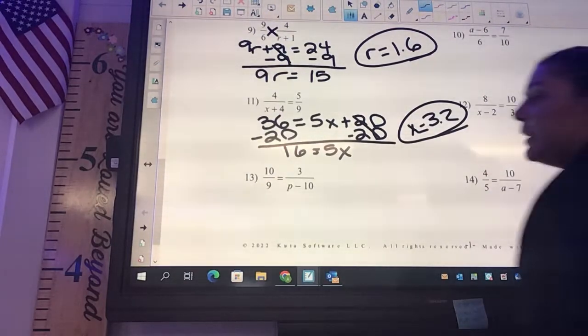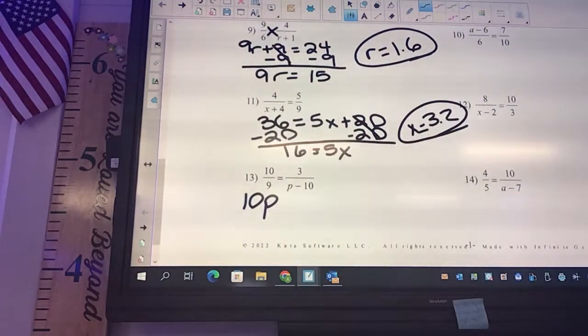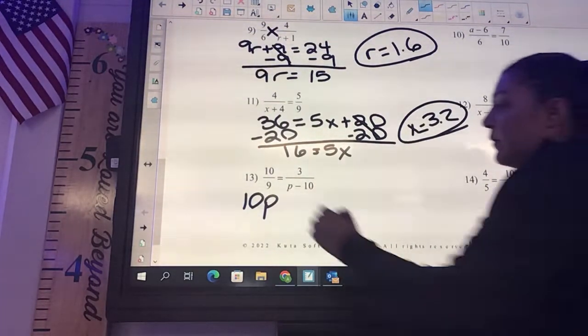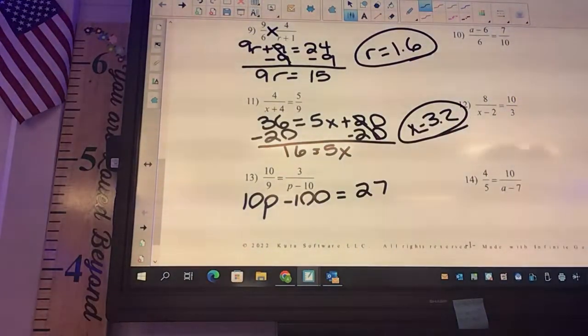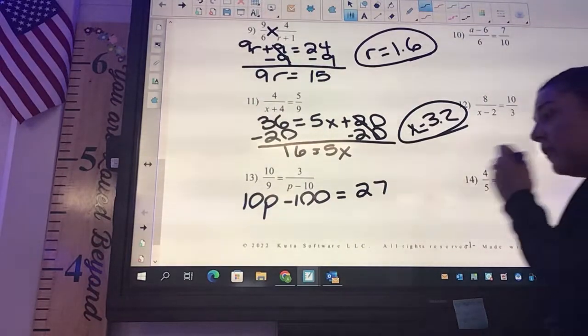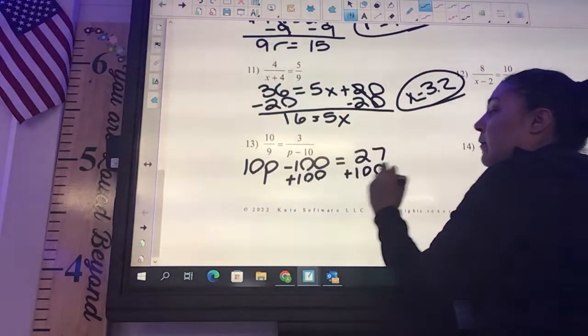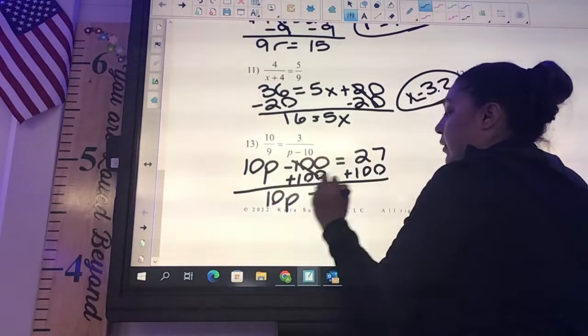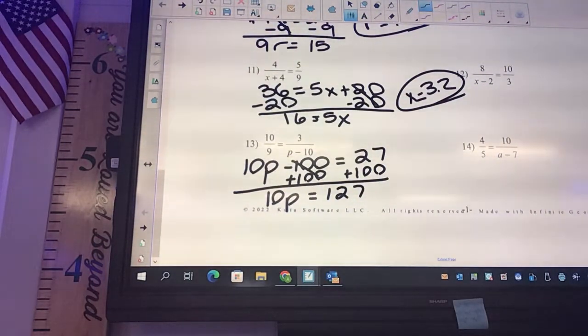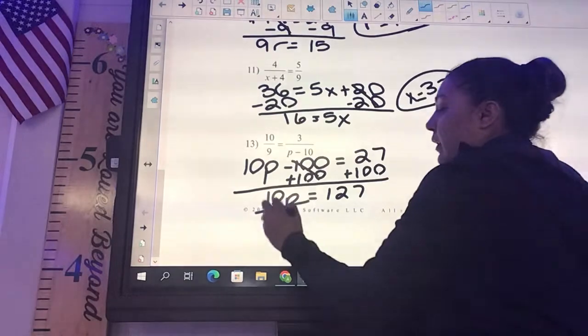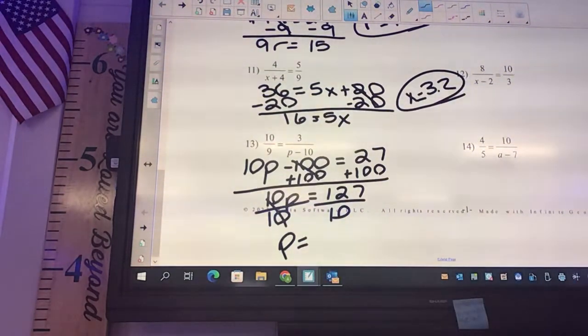Last one. 10 times p is going to be 10p, 10 times negative 10, negative 100. Negative 100 equals 27. So we say plus 100, we get 10p equals 127. And then divide by 10. And what are you going to get? 12.7.